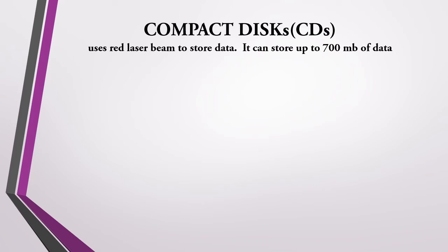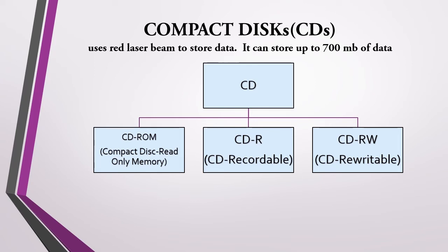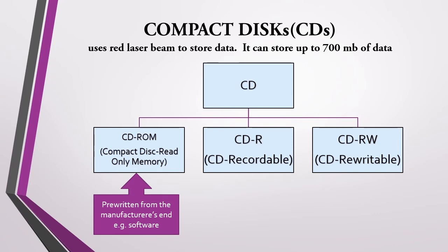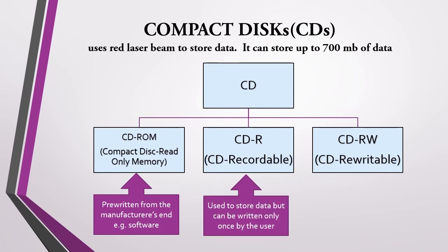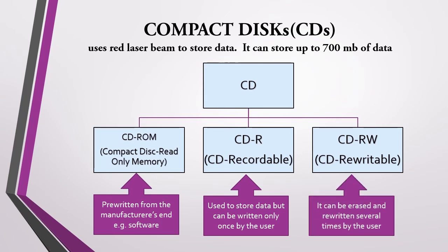The second storage device is the compact disk, also called CD-ROM. CD-ROMs are relatively cheap and have a storage capacity of up to 700 MB. There are three main types: CD-ROM (compact disk read-only memory) — pre-written from the manufacturer's end, for example software; CDR (compact disk recordable) — can be written on only once; and CDRW (compact disk re-writable) — can be erased and re-written several times by the user.